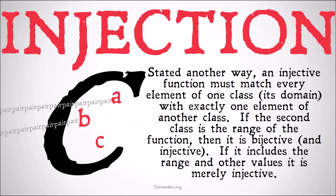Said another way, an injective function must match every element of one class — its domain — with exactly one element of another class, and none of the elements of the domain may match with the same element of that range. The second class can have at most one match in the domain. If the second class is the range of the function, then it is bijective and injective. If it includes the range as well as other values, it is merely injective.